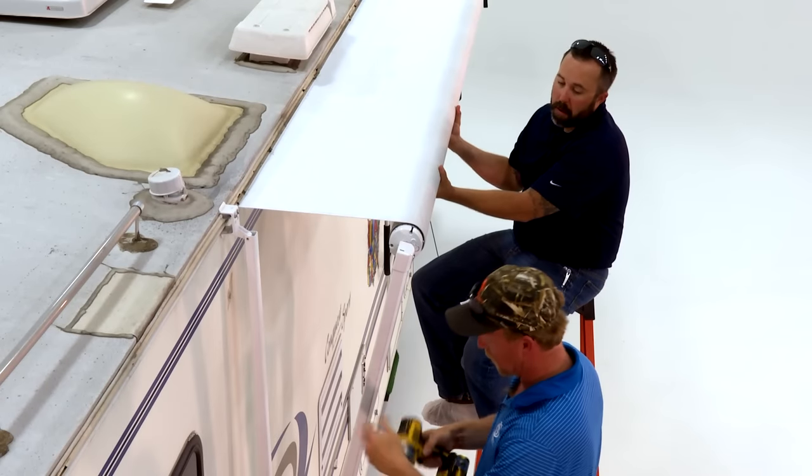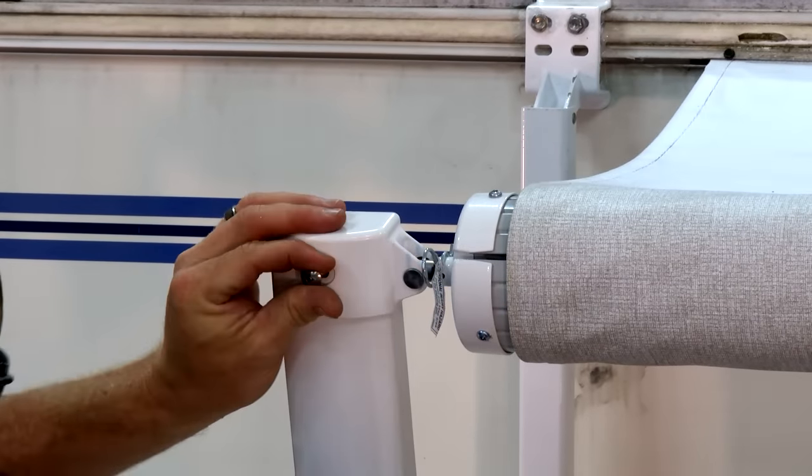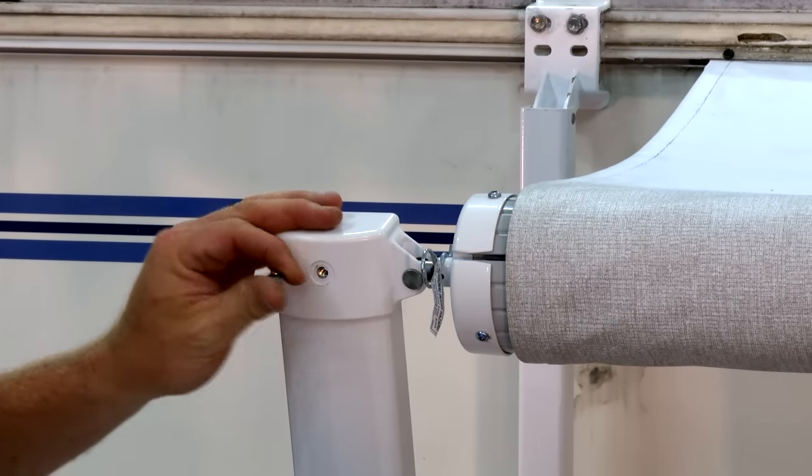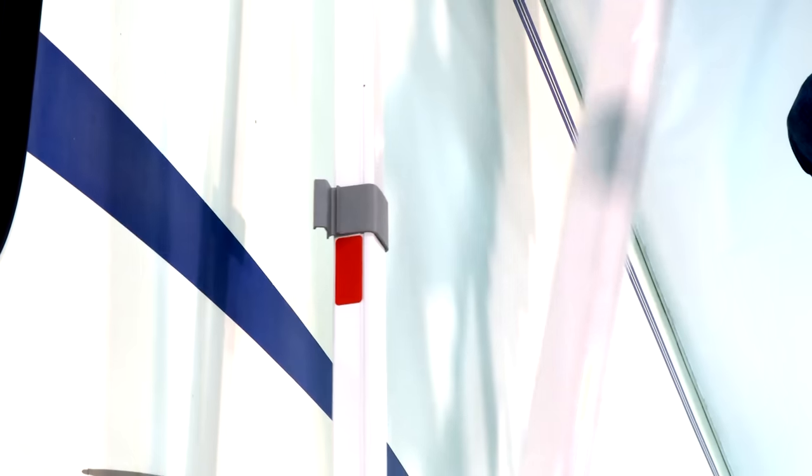With another person holding the roll tube and using a Phillips bit, remove the screw that attaches the awning arm to the end cap. Lift the awning assembly up and out of the awning arm. Latch the awning support arm into its locked travel position.